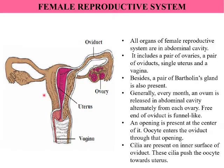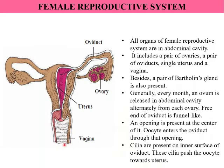Besides these parts, a pair of Bartholin's glands is also present. Bartholin's glands are present in females; they are the size of a pea and are present one on either side of the vagina. Their function is to secrete mucus and keep the vagina lubricated.